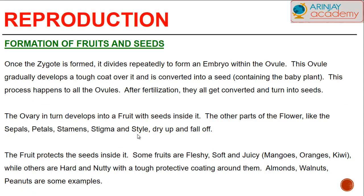How are fruits and seeds formed? Once a zygote is formed, it divides repeatedly to form an embryo within the ovule. This ovule gradually develops a tough coat over it and is converted into a seed containing the baby plant. This process happens to all the ovules — after fertilization, they all get converted into seeds. The ovary develops into a fruit with seeds inside it.